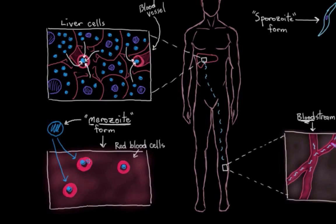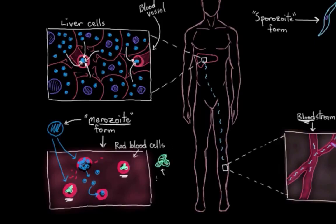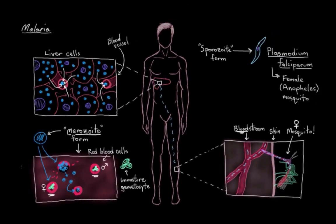Things get even more interesting from here. Some of the merozoites do exactly what they did in the liver cells — they asexually reproduce, creating tons of new merozoites, which burst out of the red blood cells and go on to infect more red blood cells. But another group, once they infect a red blood cell, they shapeshift into what are called immature gametocytes — some will be male, and some will be female.